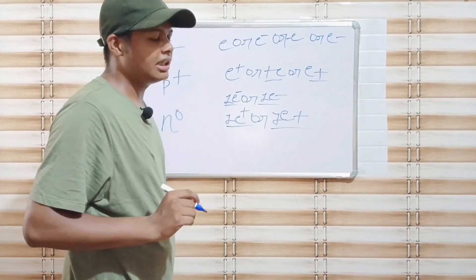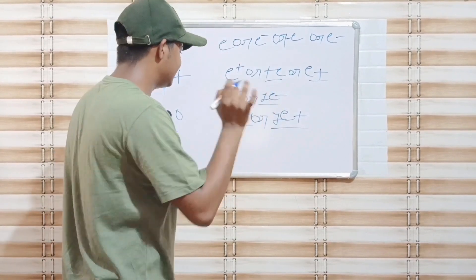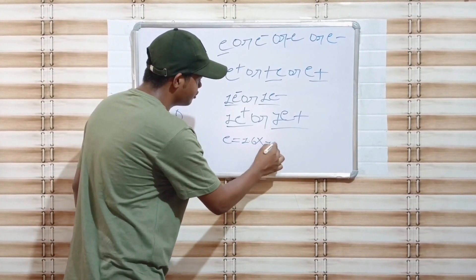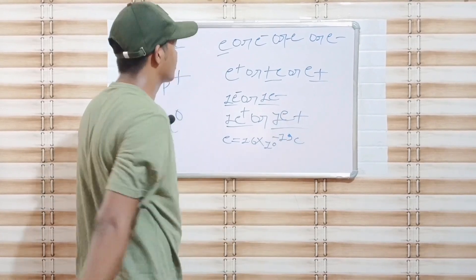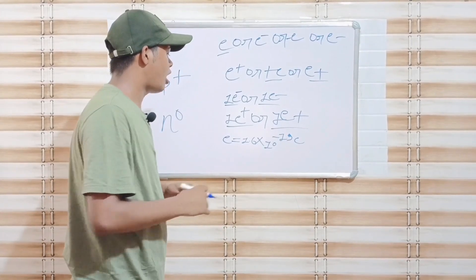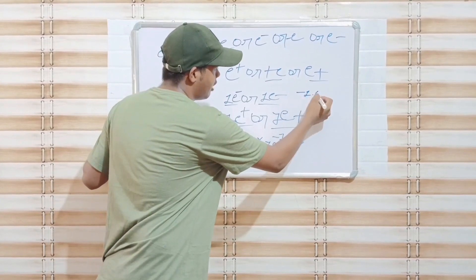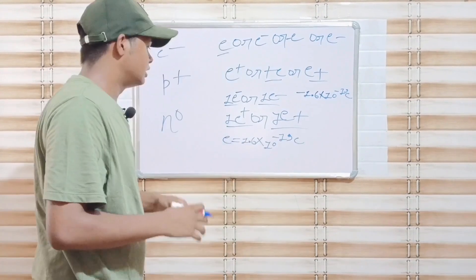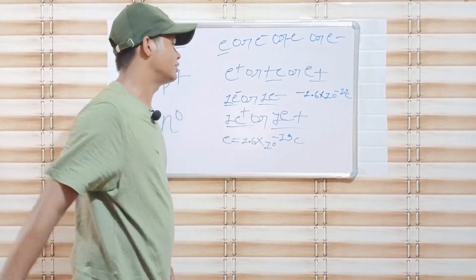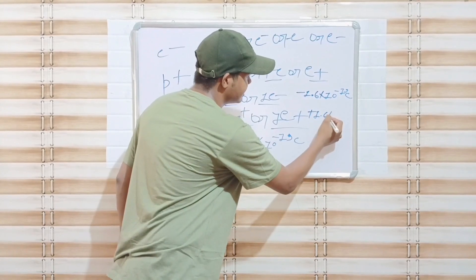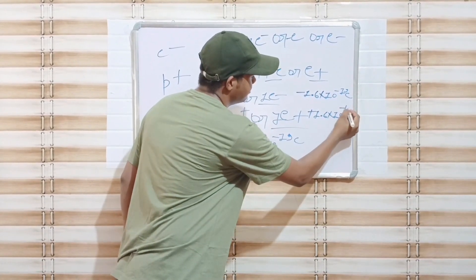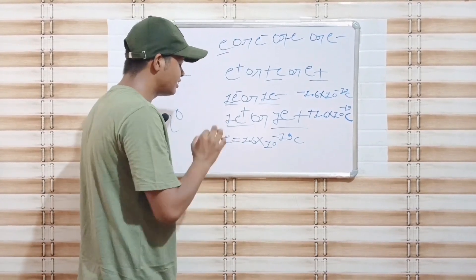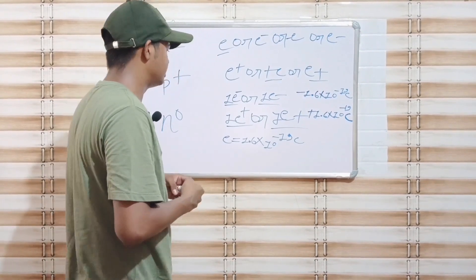The numerical value of e is 1.6 into 10 to the power negative 19 coulomb. So the numerical value of one e negative is minus 1.6 into 10 to the power negative 19 coulomb. The numerical value of one e positive is positive 1.6 into 10 to the power negative 19 coulomb. 'e' is just the symbol for the certain charge 1.6 into 10 to the power negative 19 coulomb.